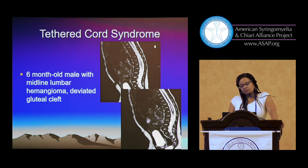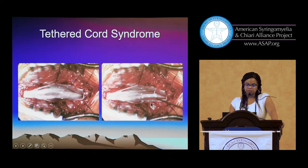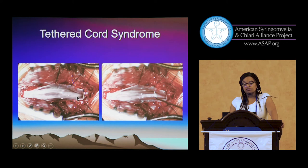This six-month-old male had a midline hemangioma and a deviated gluteal cleft. He had a syrinx within the spinal cord, but also a filum cyst and thickened filum. He had surgery — the cyst at the beginning of the filum, and then a very thickened filum, almost as thick as the spinal cord itself.